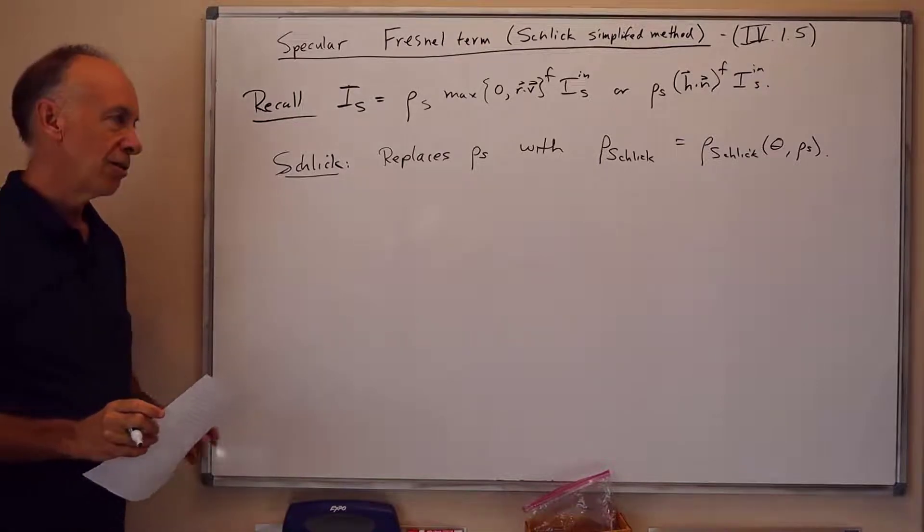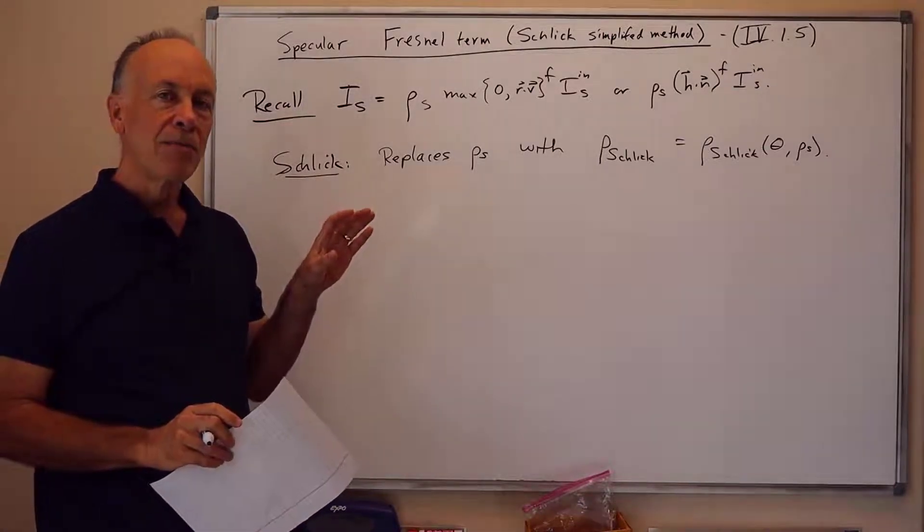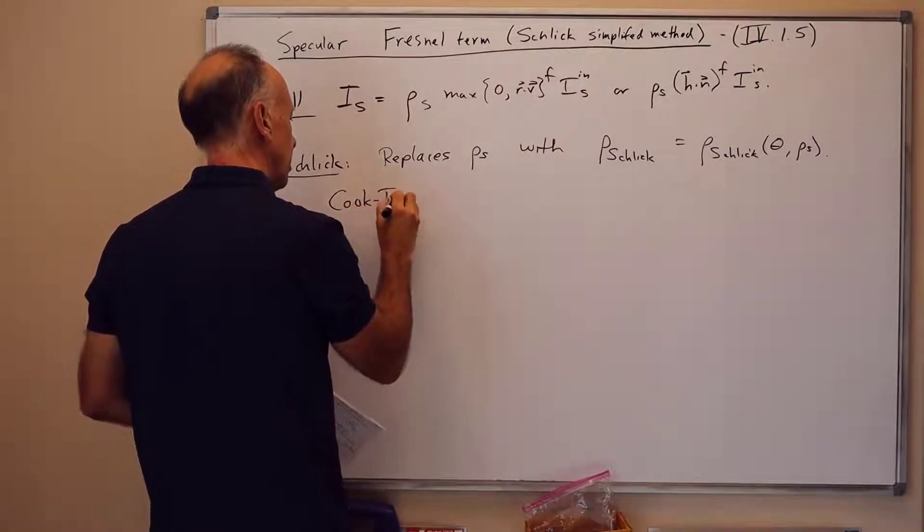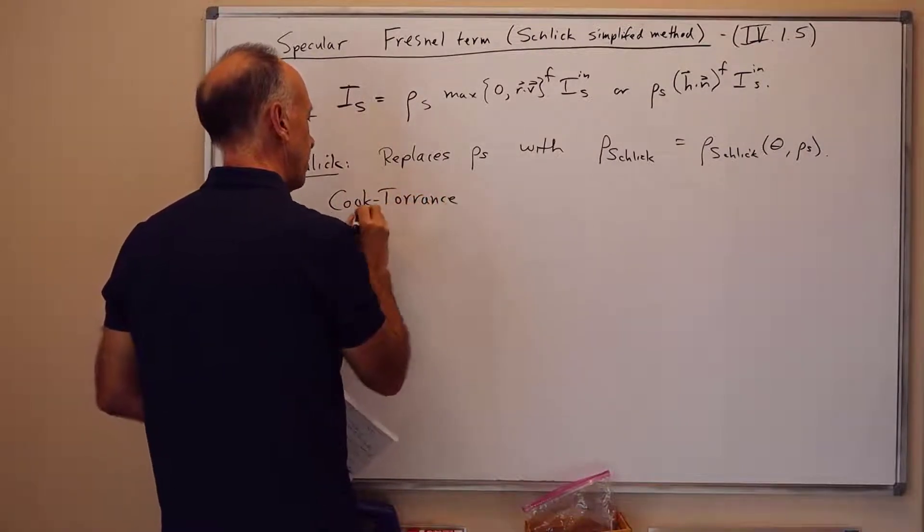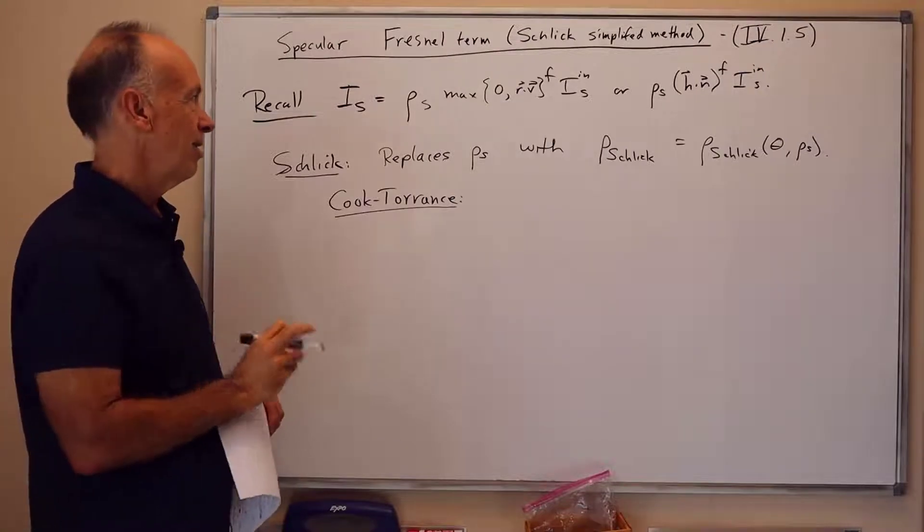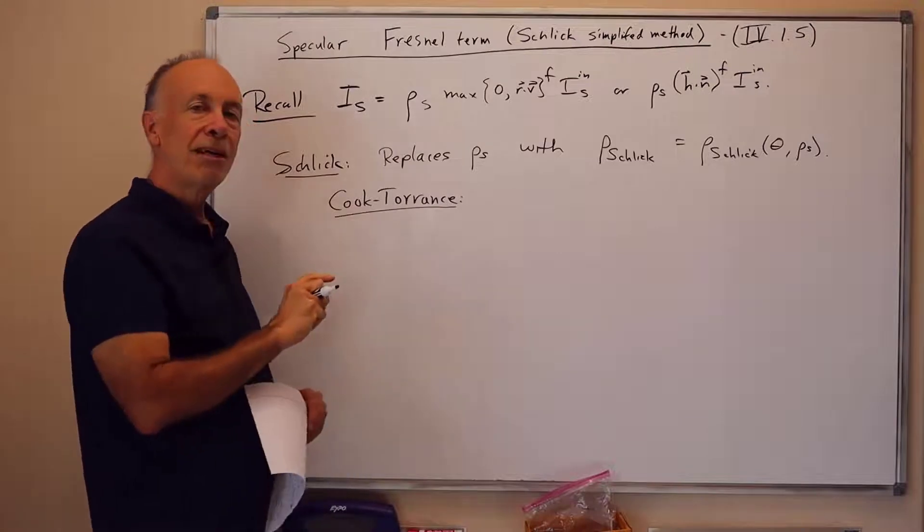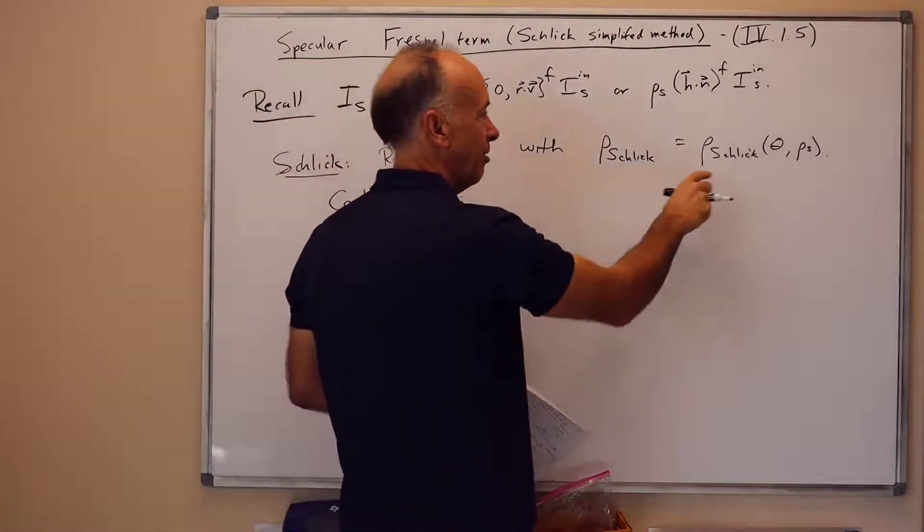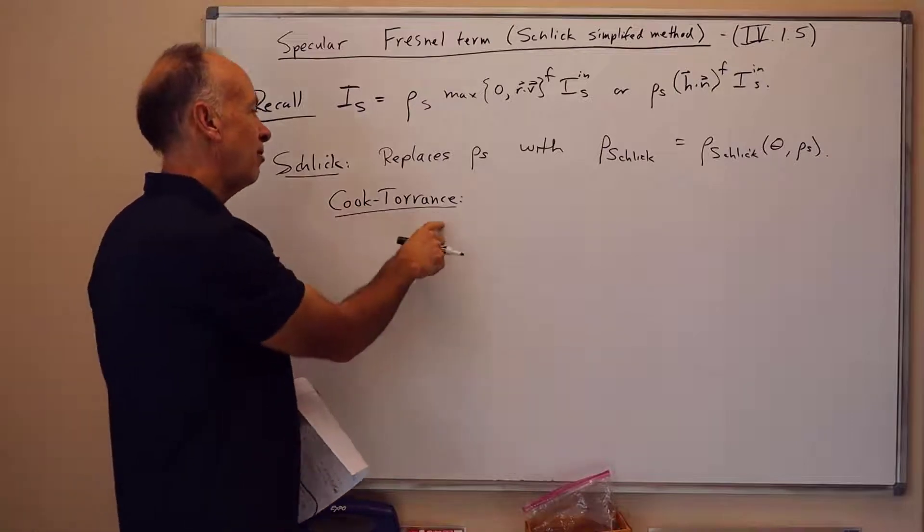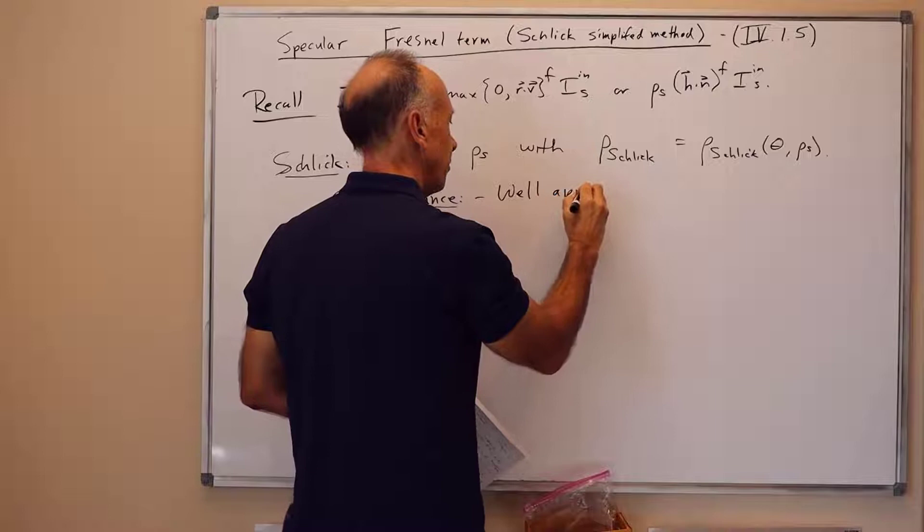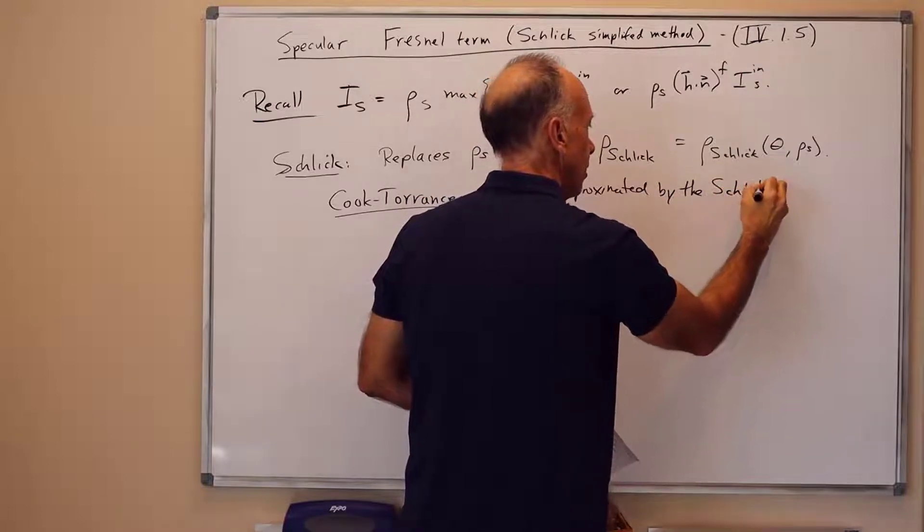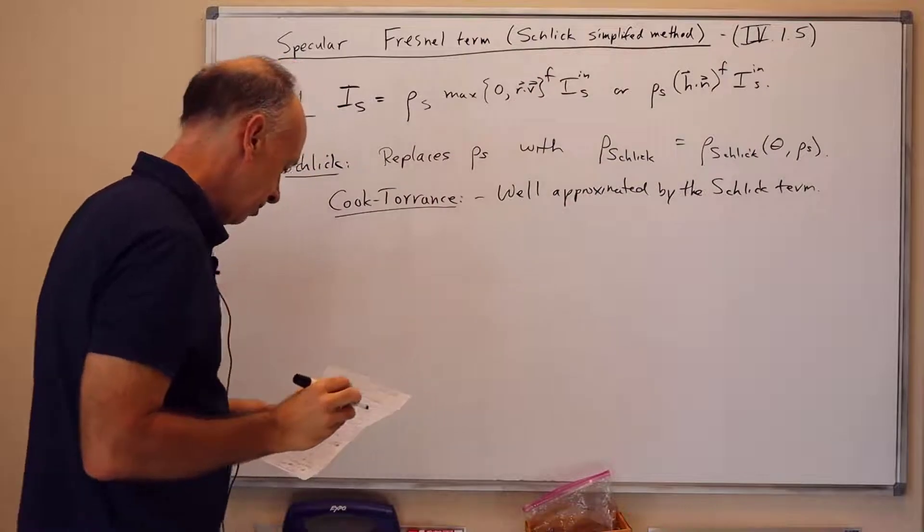So this is a, Schlick gave a fairly simple formula for this which I'll write on the board in a moment. It's based on more sophisticated physically based computations. So there's some formulas due to Cook Torrance and other people as well, which you can find at the end of the chapter in the book, but I won't actually talk about it. They gave a much more complicated but physically based way to compute the replacement for rho s. Schlick said, well, but we can approximate it extremely carefully with this other simple to compute term. So the Schlick approximation gives us a very good approximation to the more sophisticated Cook Torrance values. So this is well approximated by the Schlick term.